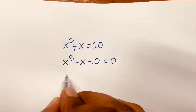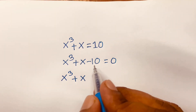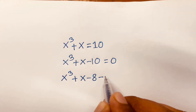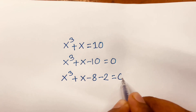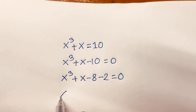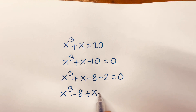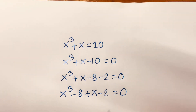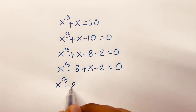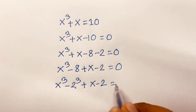Here is x to the power 3 plus x, and here is minus 10. The nearest cubic number is minus 8, and here is minus 2, so minus 8 minus 2 equals minus 10. Then I can say here is x to the power 3 minus 8, plus x minus 2, is equal to 0. That gives x to the power 3 minus 2 to the power 3, plus x minus 2, is equal to 0.